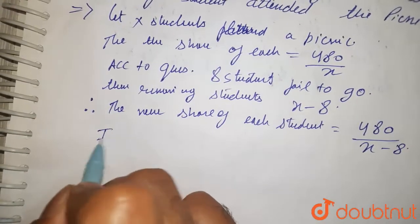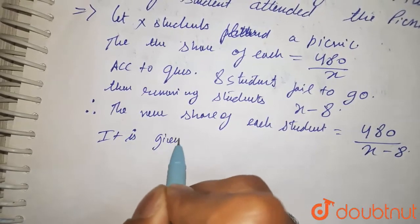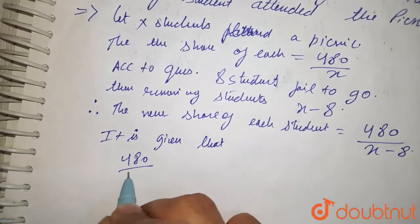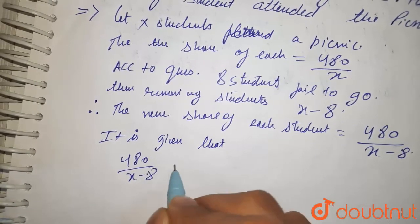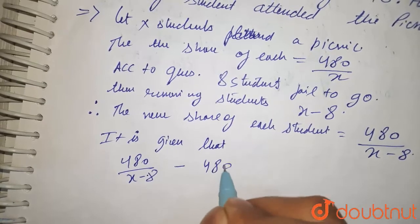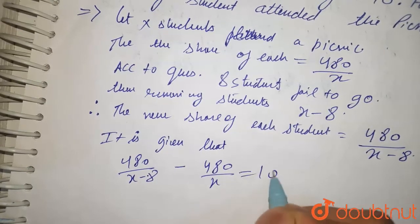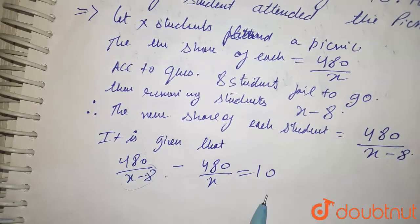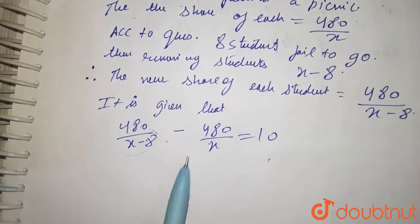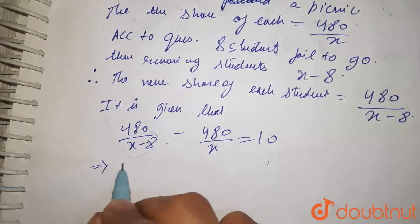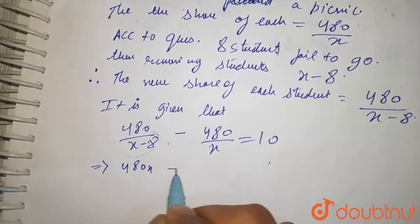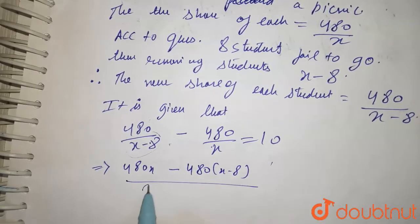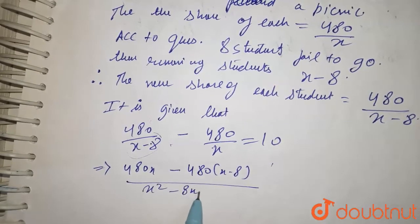It is given that 480 upon (X minus 8) minus 480 upon X is equal to 10. Now we take LCM, so this becomes 480X minus 480 into (X minus 8), upon X squared minus 8X.